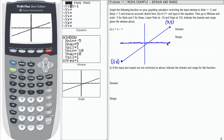Then my domain travels from negative 5, less than or equal to input, which is x, less than or equal to my maximum input, which is 5.